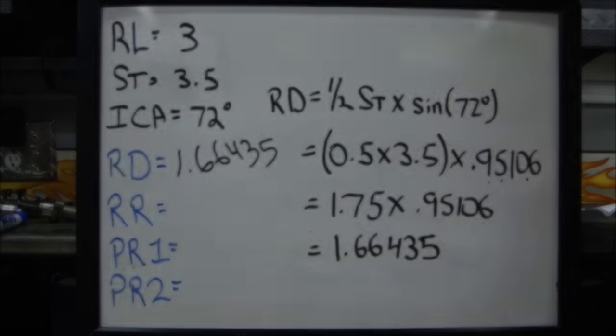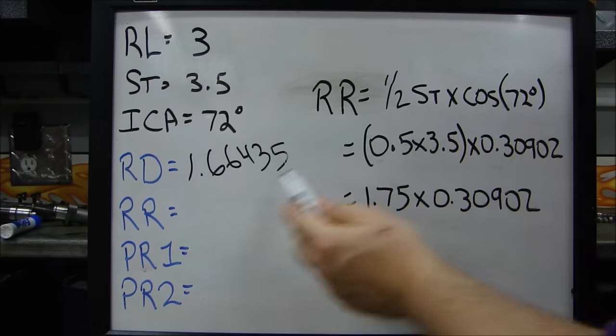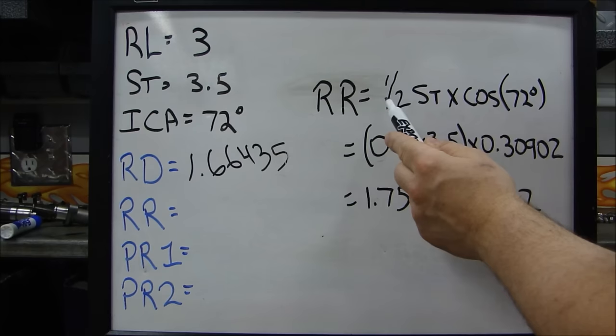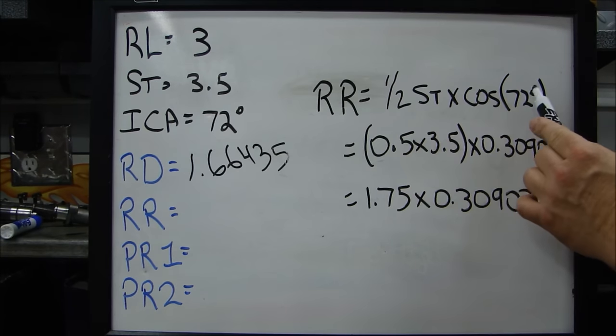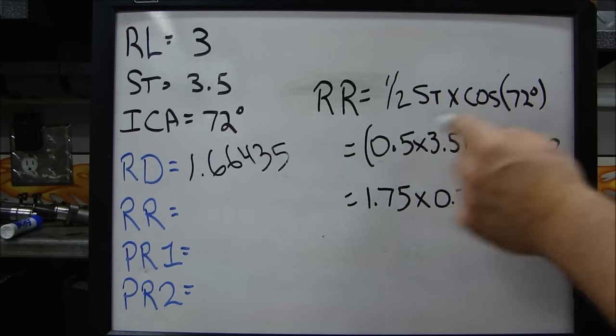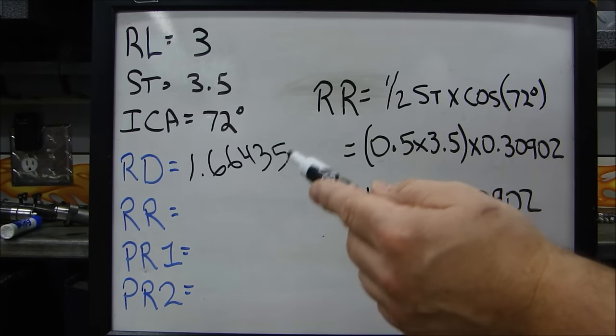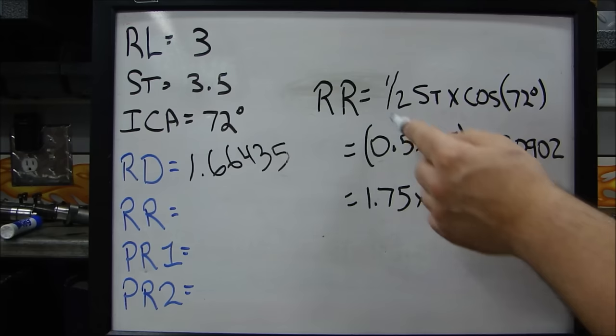Now, let's calculate our RR. Now, for the RR, the RR equals one half of the stroke times the cosine of the installed centerline. I'm using 72 degrees just to make it easy.